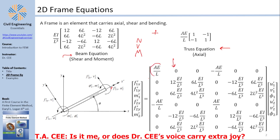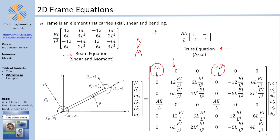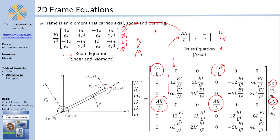You have the one, minus one, minus one, one from the axial truss element, and you can see this only affects u1 and u2, which are the movements local in x at nodes one and two. However, the beam terms affect the vertical movement of node one, the rotation of node one, the vertical movement of node two, and the rotation of node two. The good news is that those two are not coupled — you are just expanding a matrix, putting the truss elements in red circles and the beam element in red boxes.